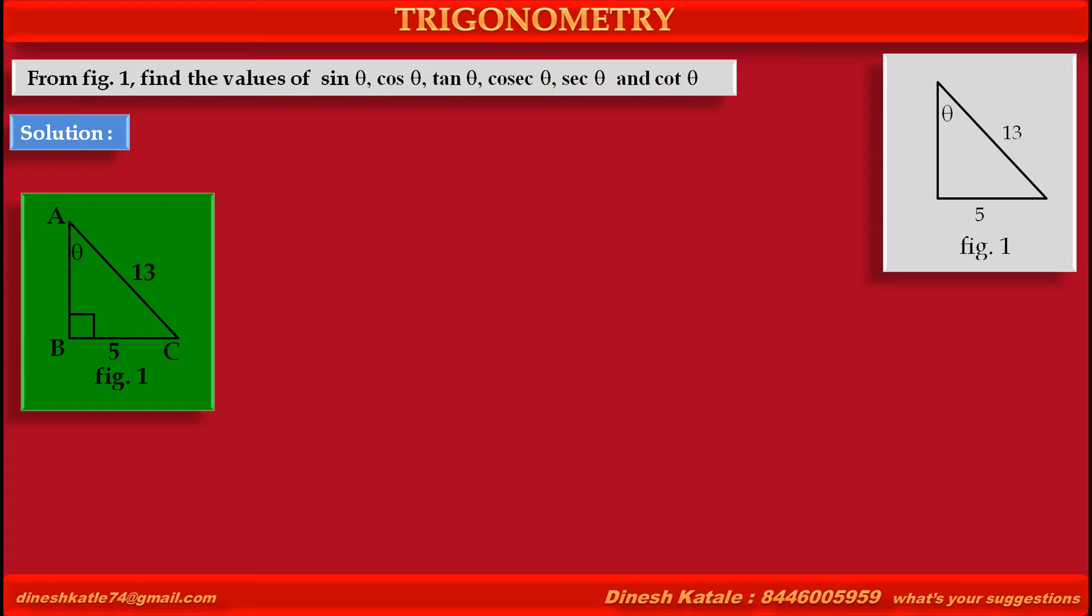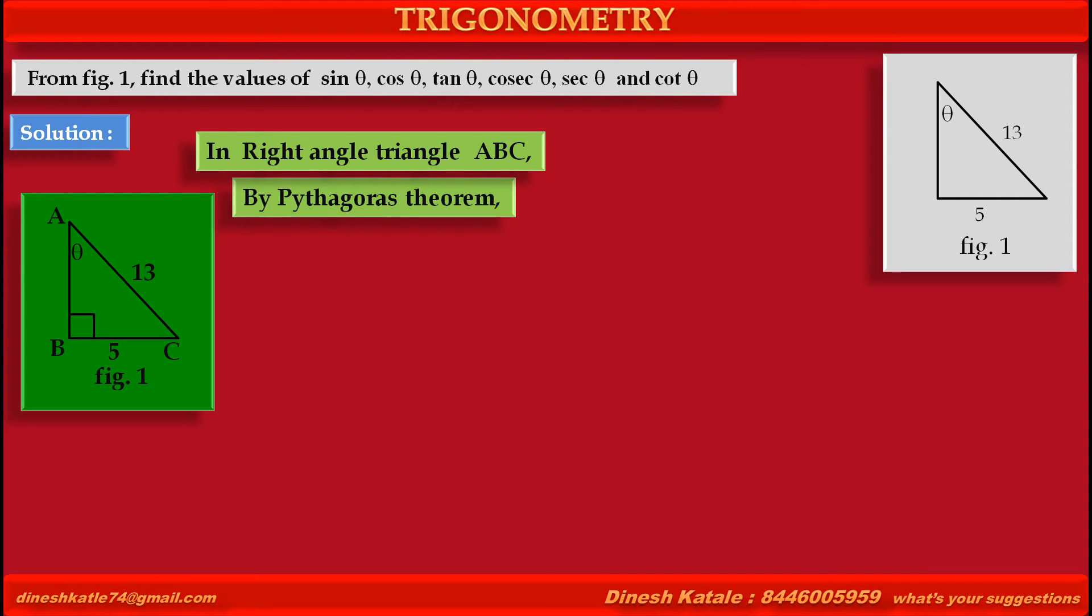To find the required trigonometric ratios, first we have to find length of AB. In right-angled triangle ABC, by Pythagoras theorem, we can write height AB square plus base BC square is equal to hypotenuse AC square.